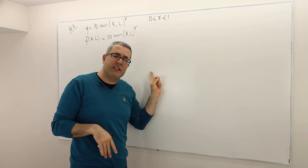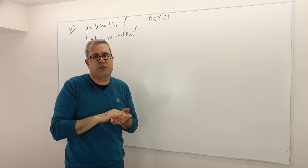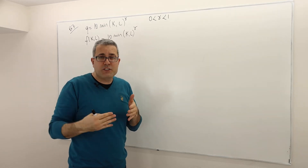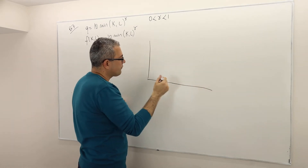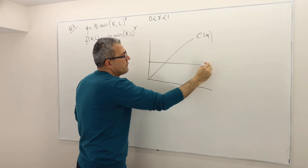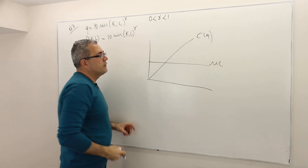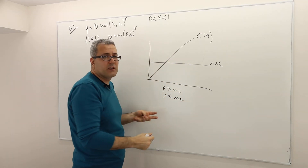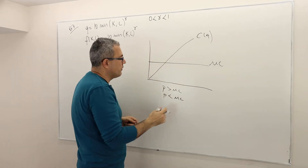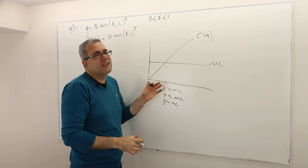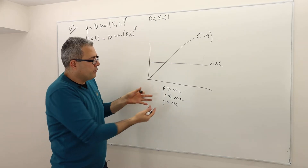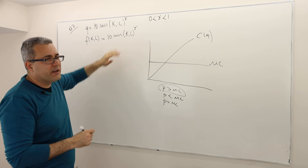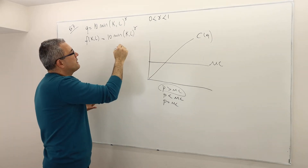If it is constant returns to scale, we're going to have a constant cost function, meaning marginal cost is fixed — not a function of quantity. When price is greater than marginal cost you should produce as much as you like; when price is less you should shut down. So it's not really a good solution. In order to have an optimal solution to the profit maximization problem, we need decreasing returns to scale, which means gamma less than one.